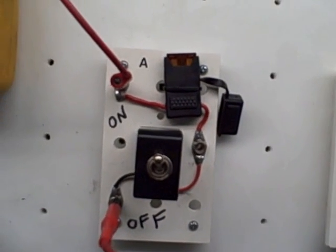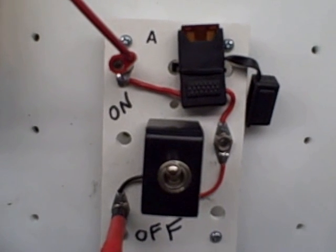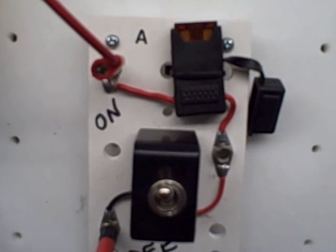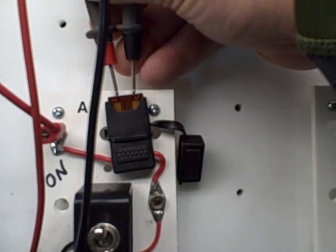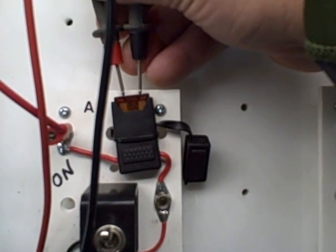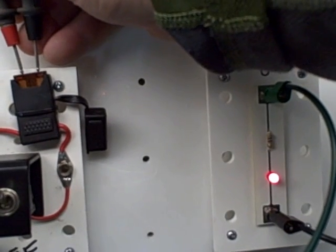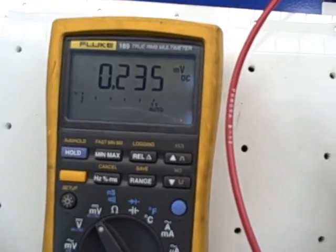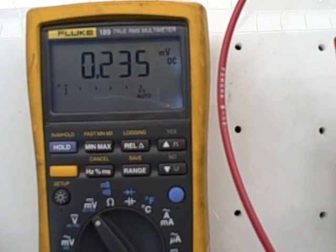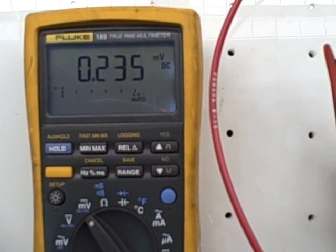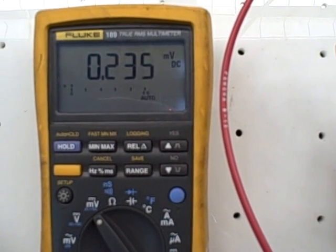Next we're going to measure the voltage drop across the spade type fuse. Here I'm going to measure the voltage drop across the fuse in the millivolt scale and you can see that